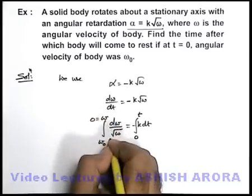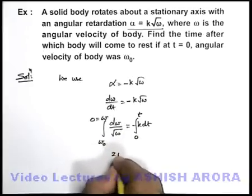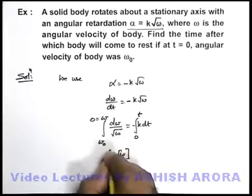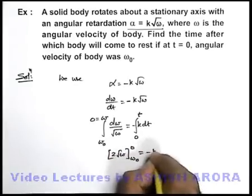So in this situation on integrating, this factor will get 2 root ω. We'll put the limits from ω₀ to zero. This is minus k t.